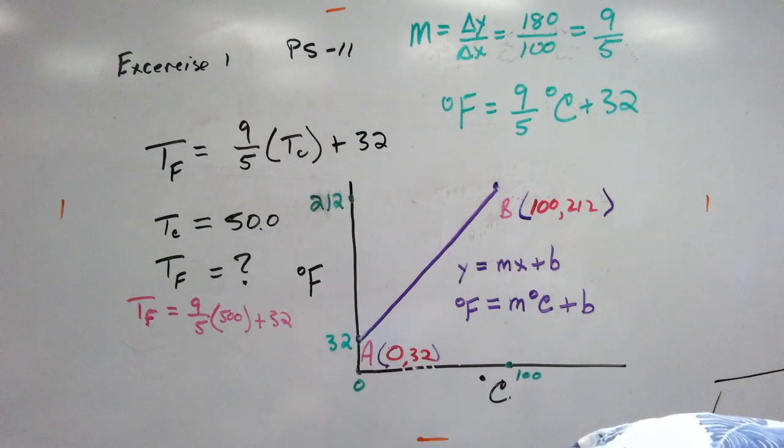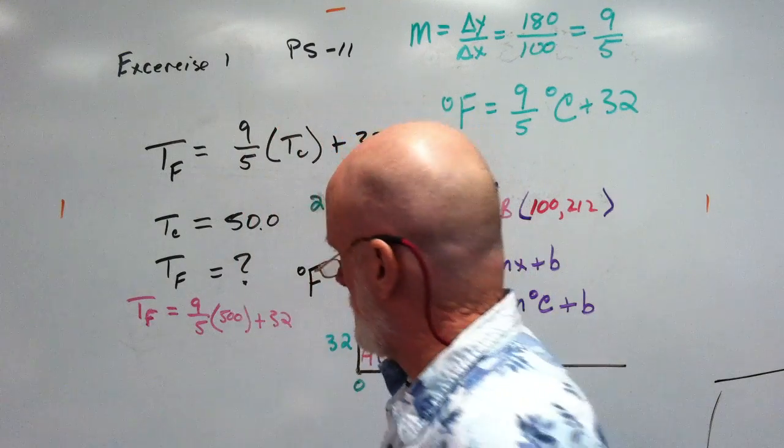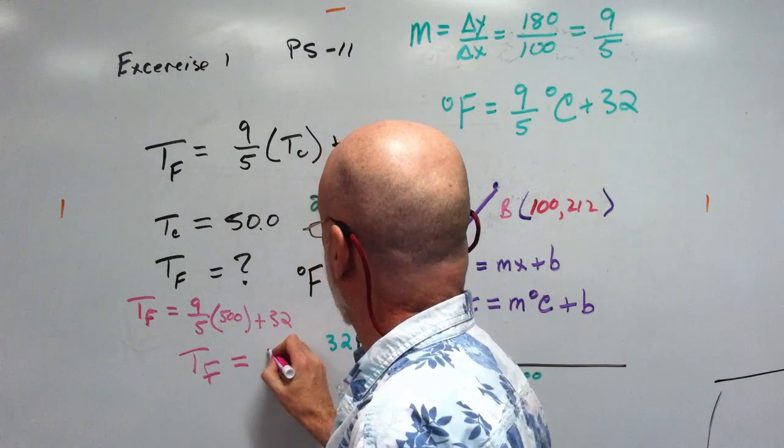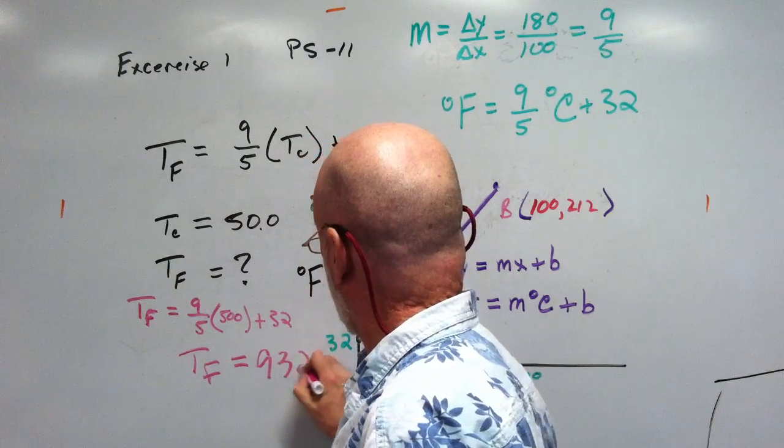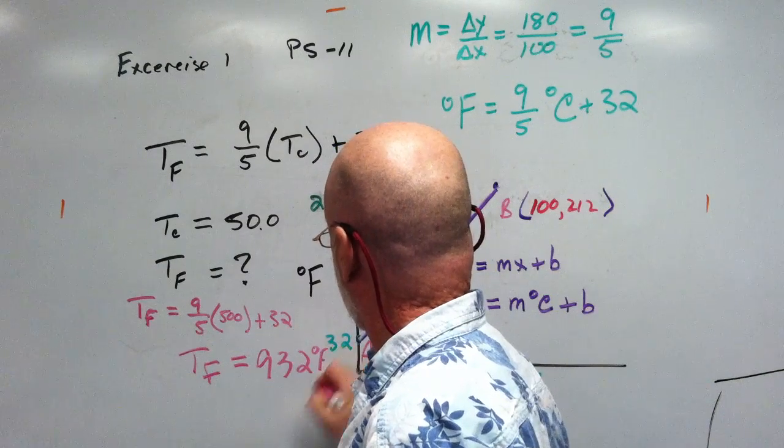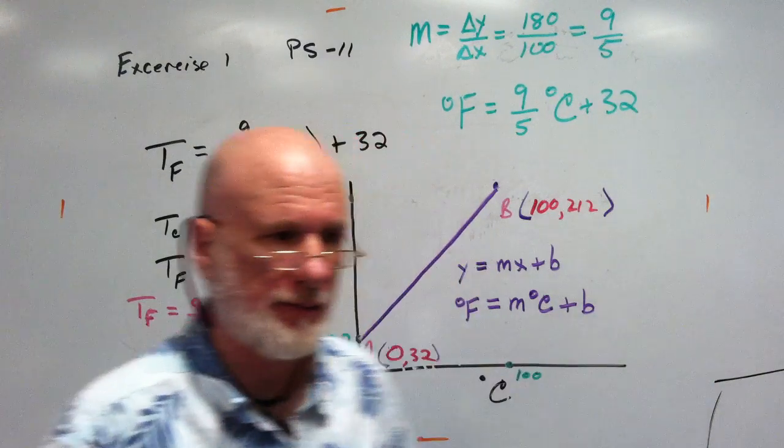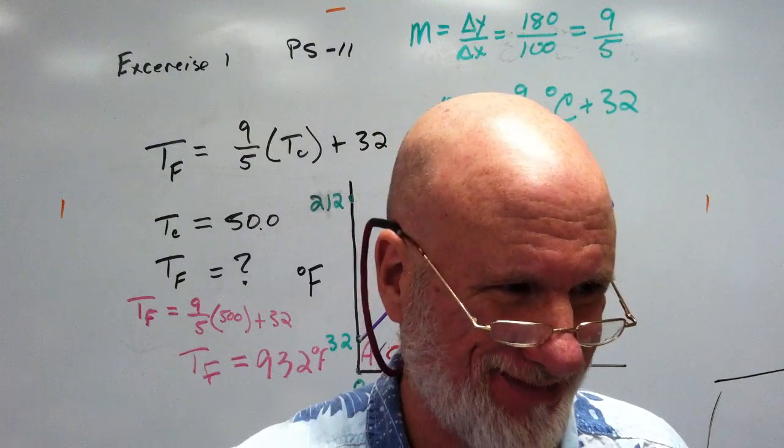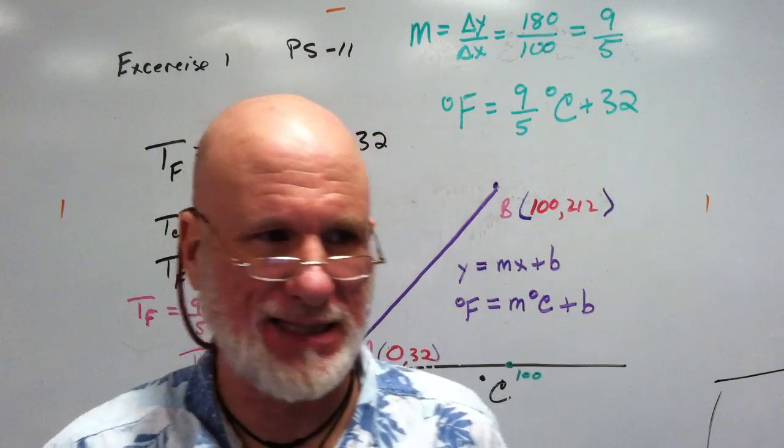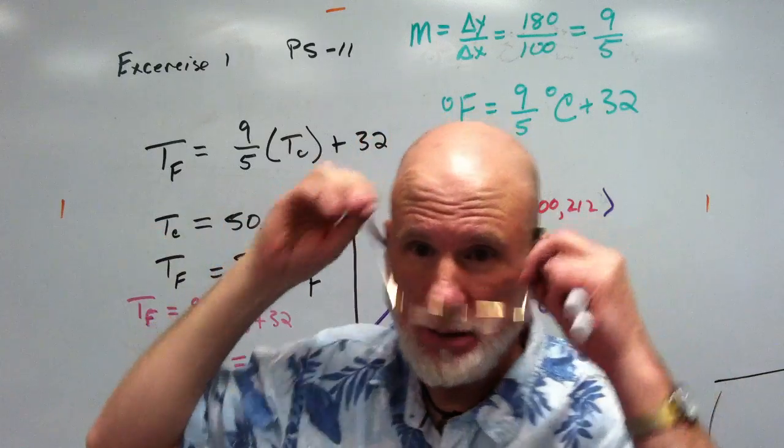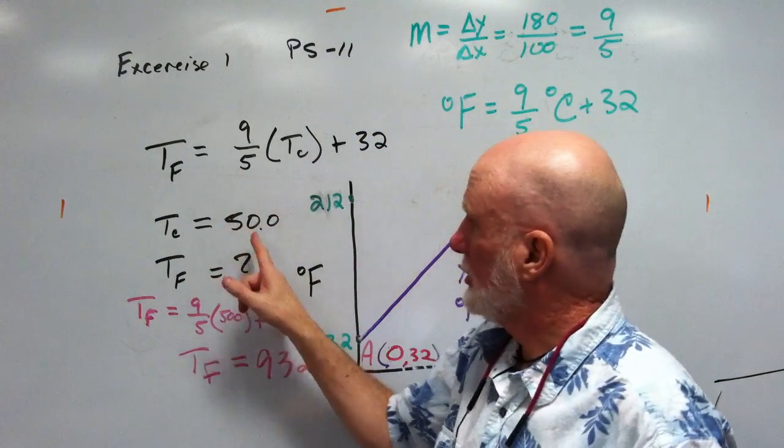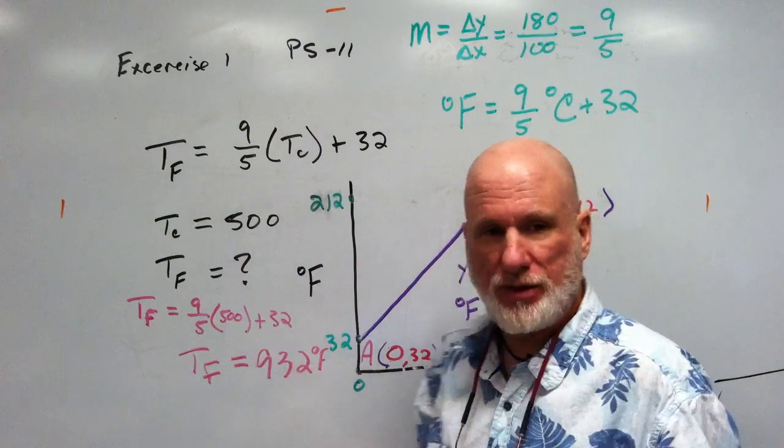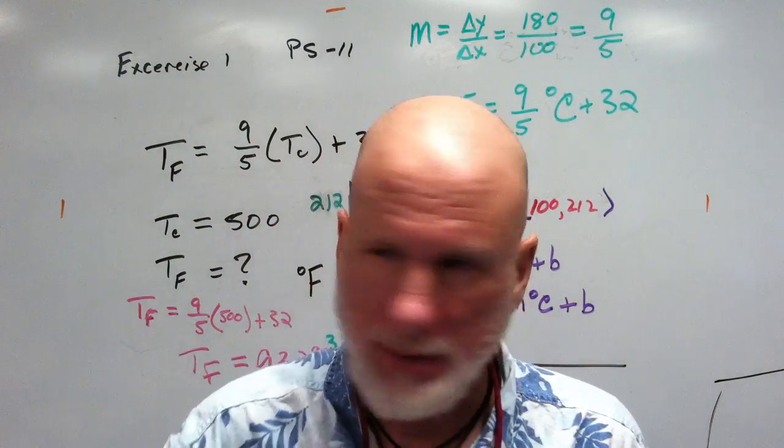Now, just to make this—so TF equals, what is it? 932. 932. Correct? Is that right? Now, I read the problem wrong. I didn't—I must not have used my glasses. But that's right. No. Excuse me. This is right. Change 500 to Fahrenheit. It's 932. Absolutely correct. Absolutely correct.